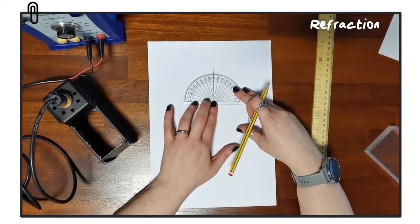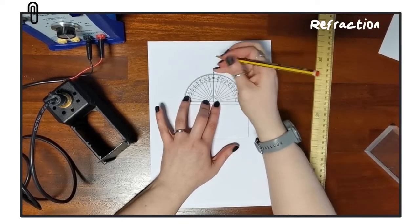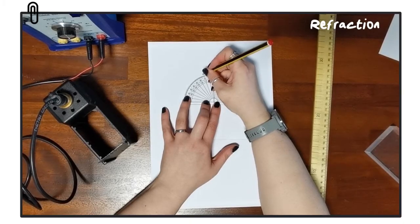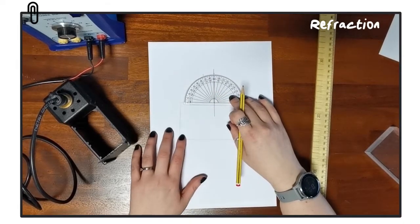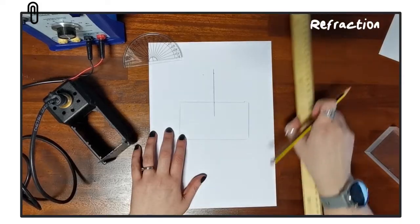The first angle of incidence that we're going to use here is 20 degrees. So using the protractor, we mark out where that ray of light is going to go, and I'll use the ruler just to map that out as well.